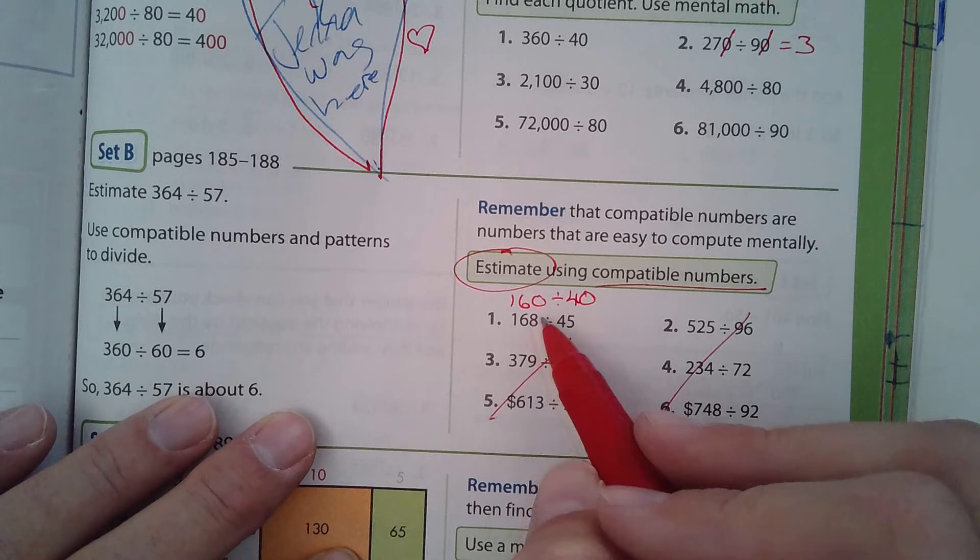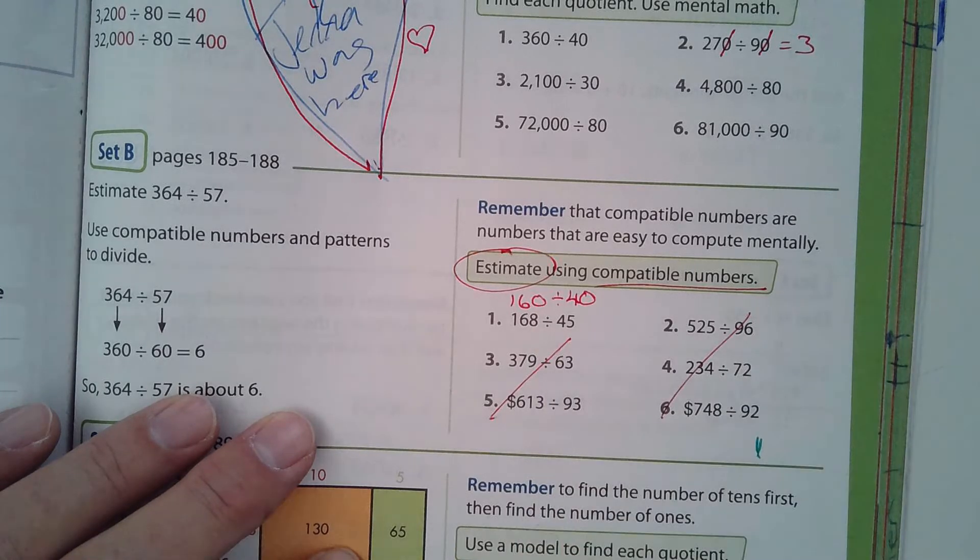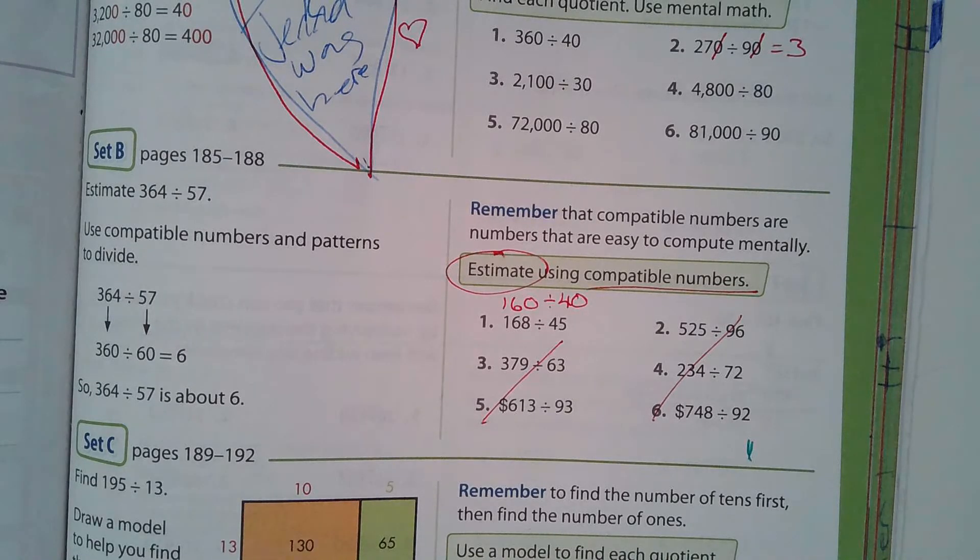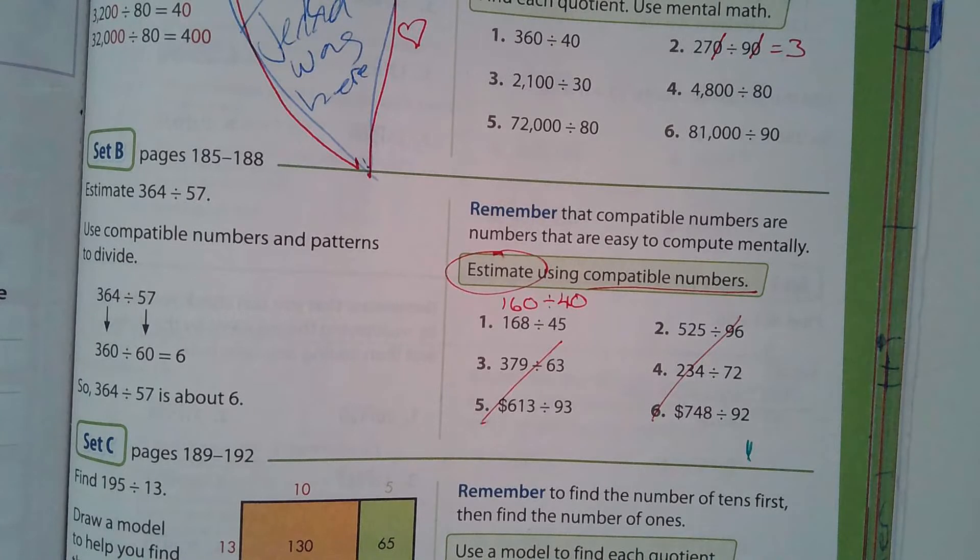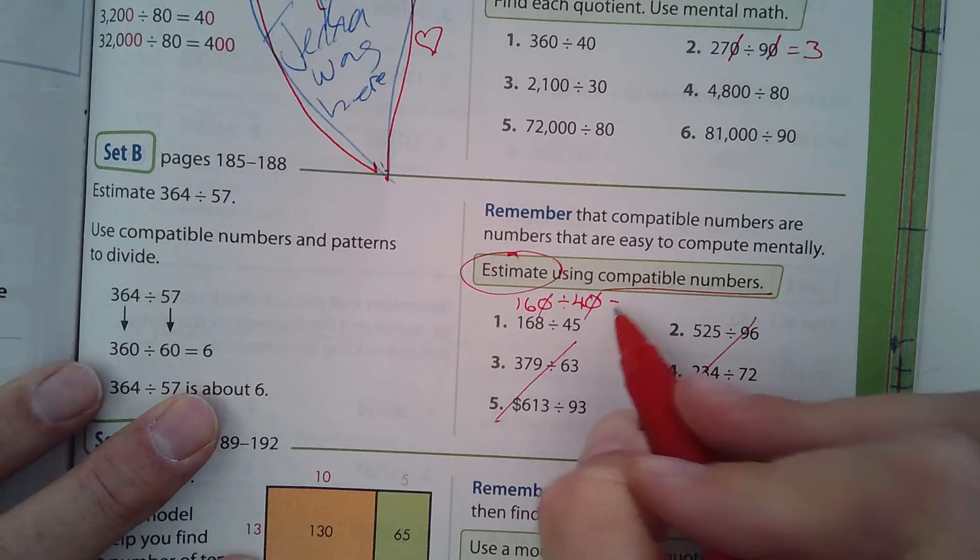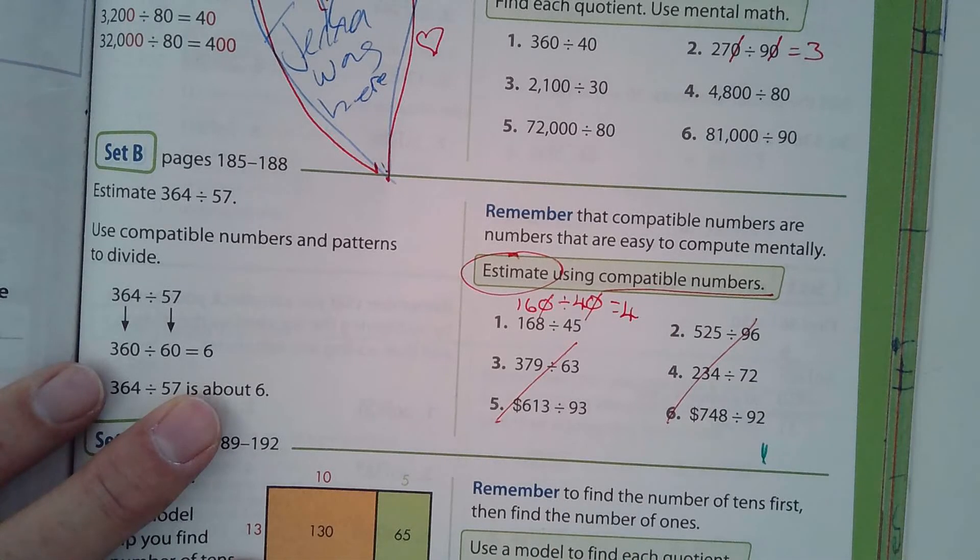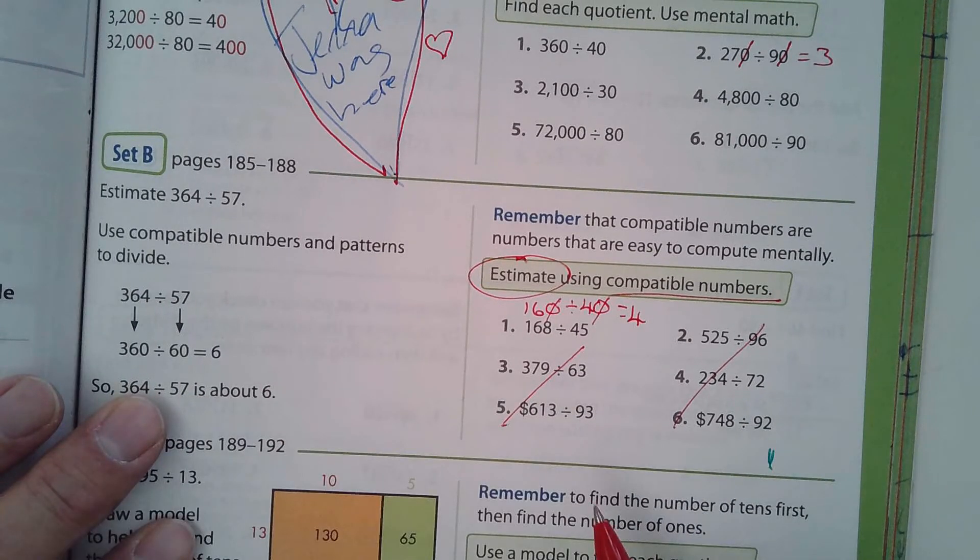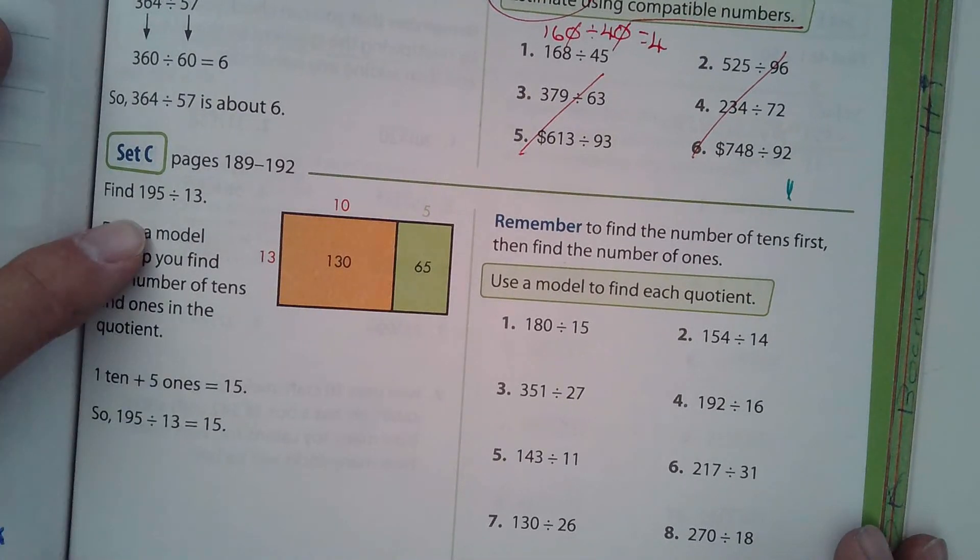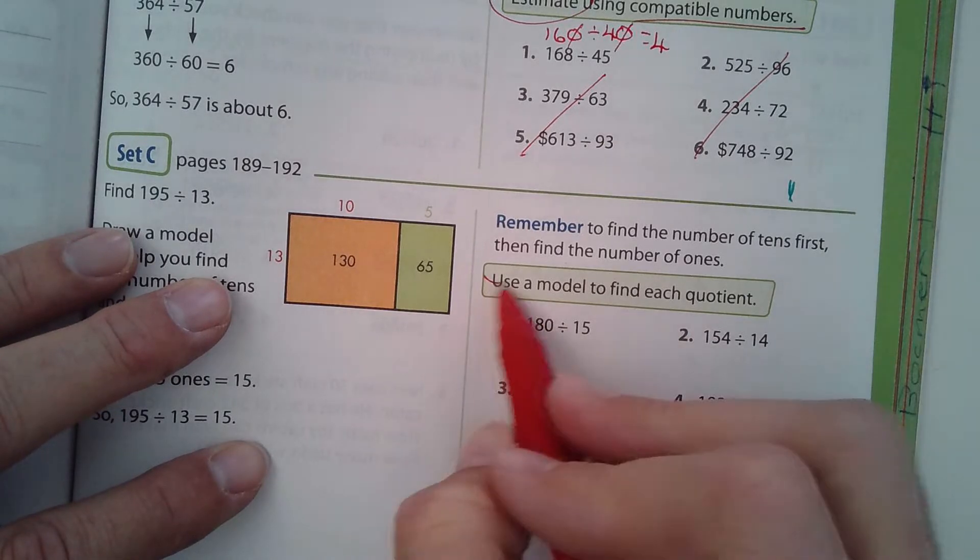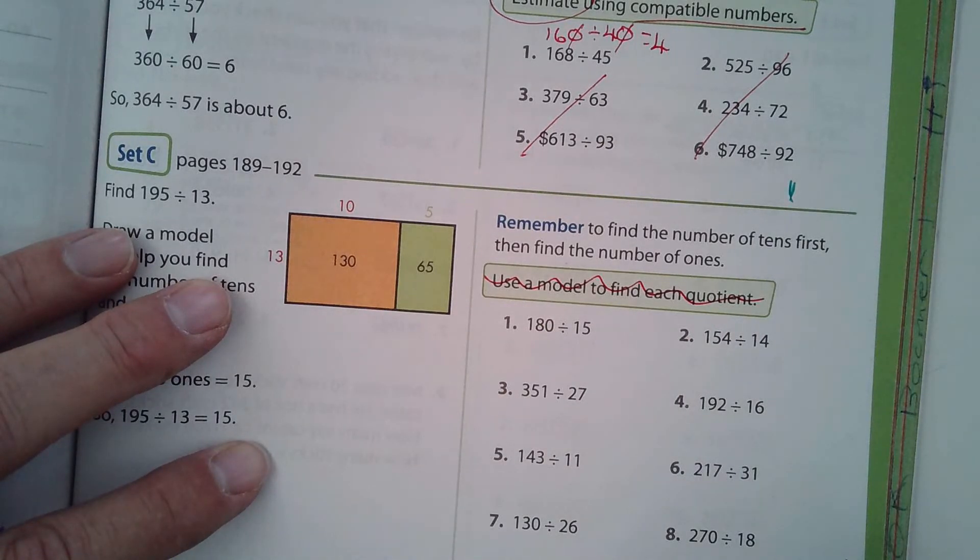Number set B here, number one. I'm not going to have you guys do these. So I'll just put a line through those and a line through those three. But I am going to do number one. I want you to look at this. It does say estimate. So if I was to estimate this, I would probably change this to 160 and I would just change this to 40. Because when you estimate, it's important that you use compatible numbers. 16 and 4, those are compatible numbers because I know that 4 goes into 16 four times.